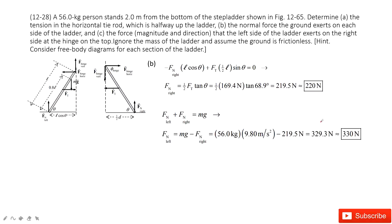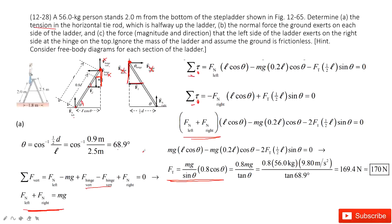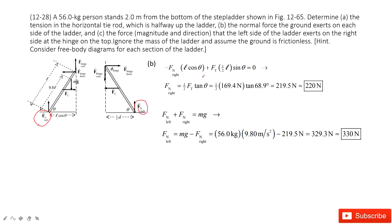The second part requires determining Fn left and Fn right. Since we now know Ft, we substitute it into our earlier equation to find Fn left. Then, using the relation Fn left plus Fn right equals gravity, we substitute Fn left to find Fn right.